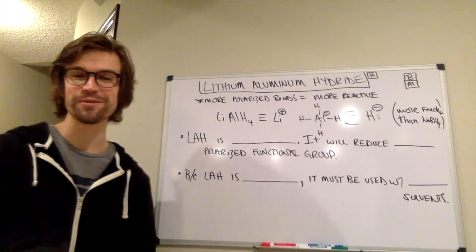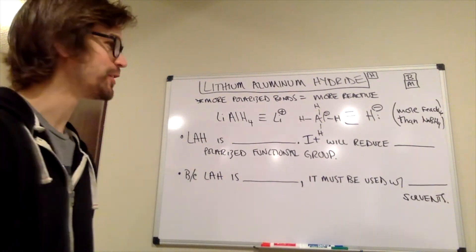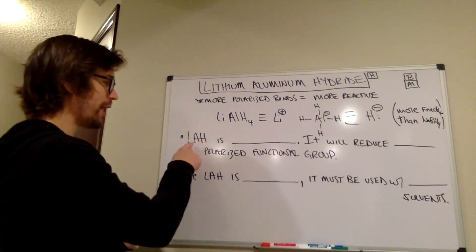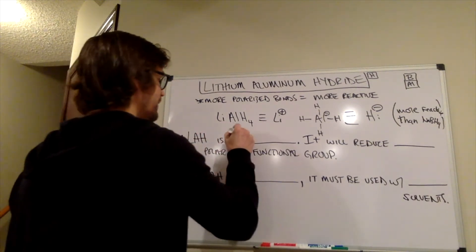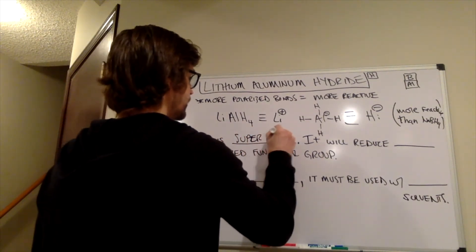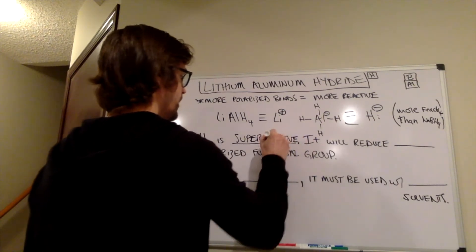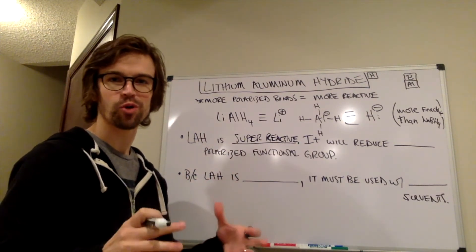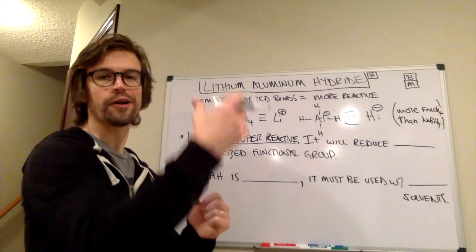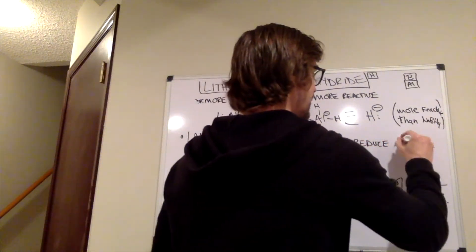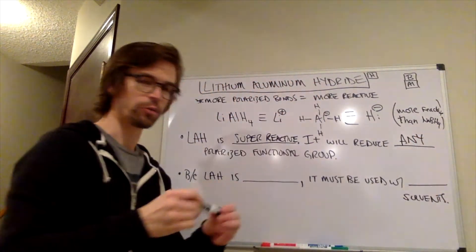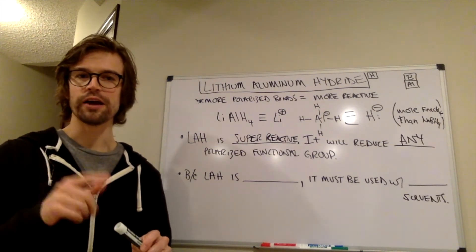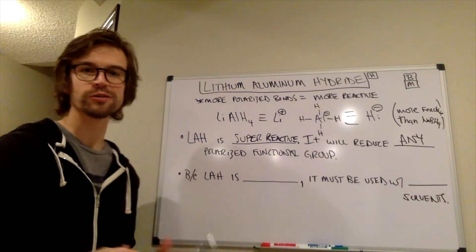All right, so now we're going to fill in some of those blanks on the note packet. So essentially, we said lithium aluminum hydride is a more reactive H minus. And really, lithium aluminum hydride, LAH, is super reactive. It will reduce, so we talked about polarized functional groups, all of those carbonyl type compounds where polarized functional groups, they have a C double bond O that's polarized, it will reduce any polarized functional group. And when we think back for a second to sodium boron hydride, sodium boron hydride would only reduce aldehydes and ketones. So this is a pretty stark difference. This one can reduce all of them.